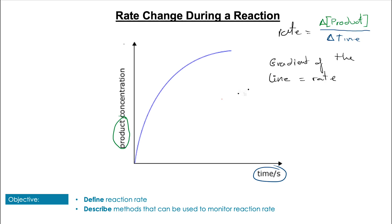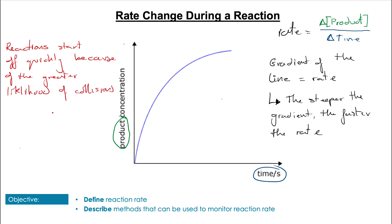The concentration time graph has a curve, and the gradient of the line equals the rate. A steeper gradient indicates a higher rate of reaction. Looking at this graph, it indicates reactions start off quickly, which makes sense because there's going to be a greater likelihood of collisions at the beginning of the reaction where the concentration of the reactants are highest.